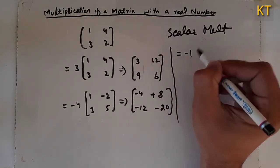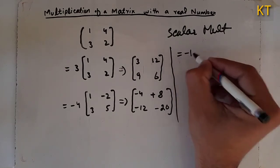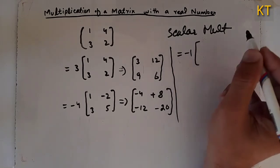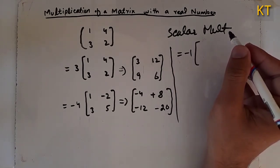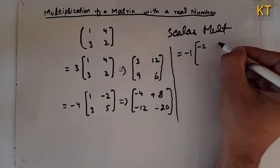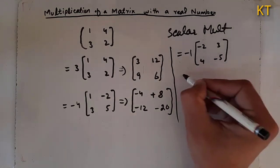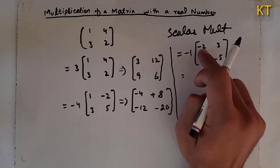When minus one multiplies the matrix, the matrix elements change. For example, minus two, three, four, minus five. Minus two times minus two, so multiply to get minus nine.